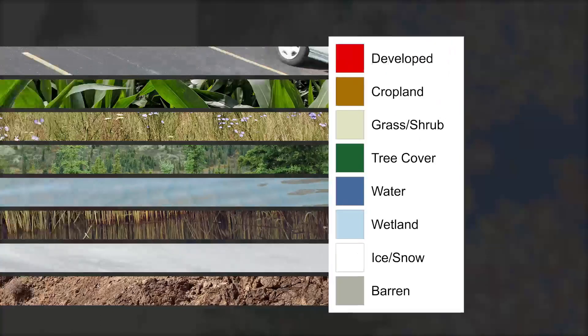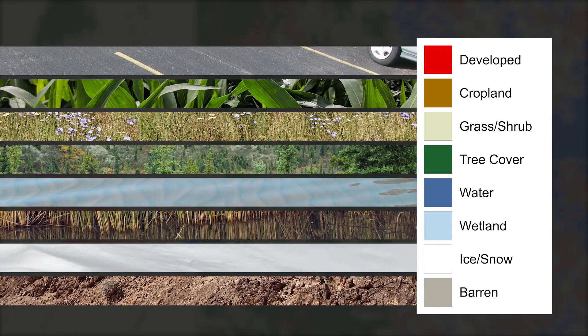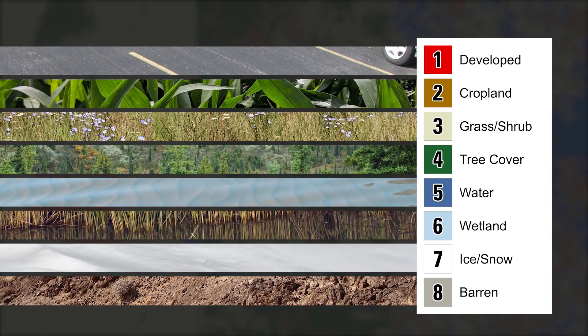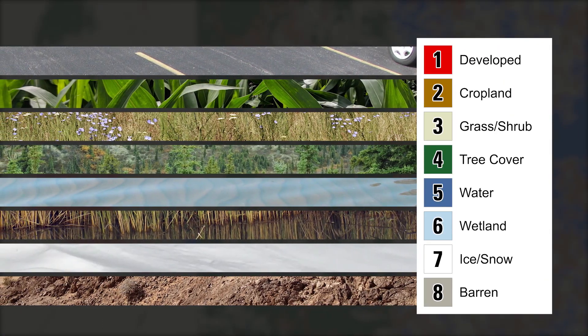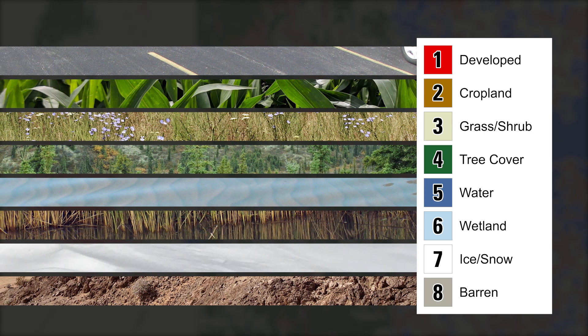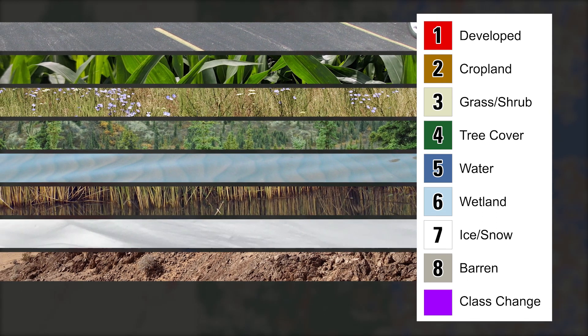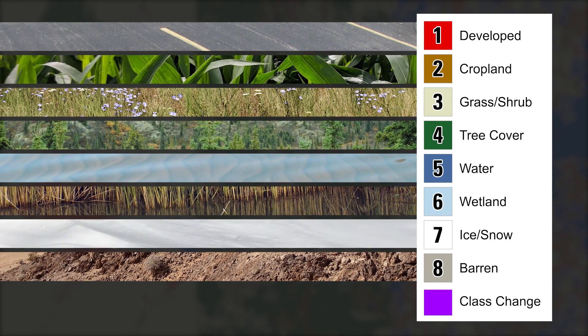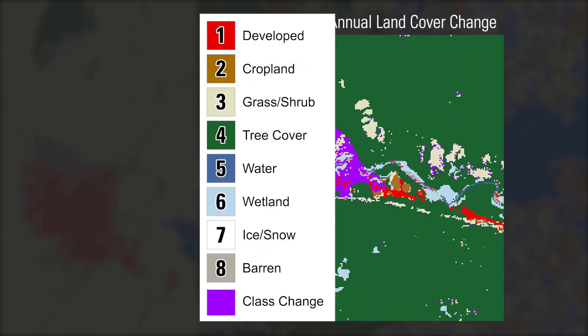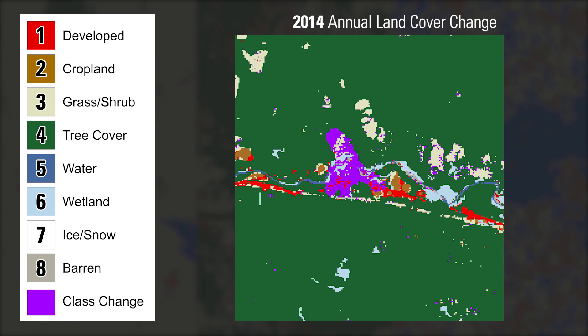Both products identify eight land cover classes, represented by unique colors and numeric values 1 through 8. The change product, however, includes additional values to indicate where land cover change has occurred, rendered as purple.